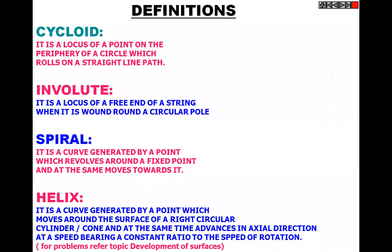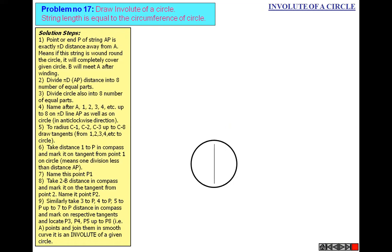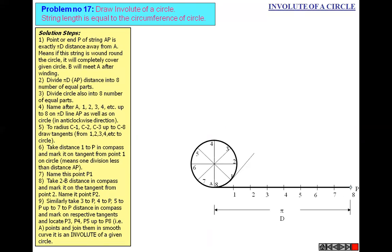Problem: draw the involute of a circle where the string length is equal to the circumference of the circle. Take a particular diameter of circle, then draw a horizontal line of length πd. Divide the circle into equal parts — here we divide into 8 equal parts — then divide the πd distance also into the same 8 equal parts. Draw tangents from points 1, 2, 3, 4, 5, 6, and 7.